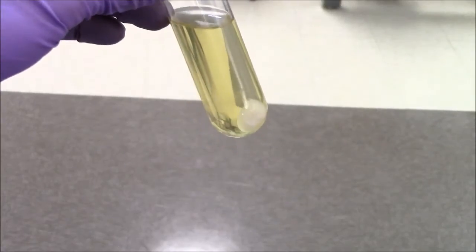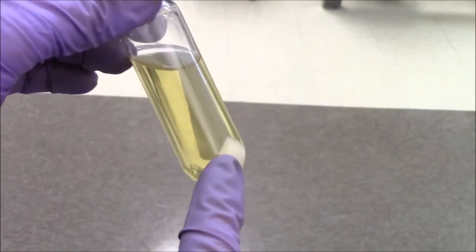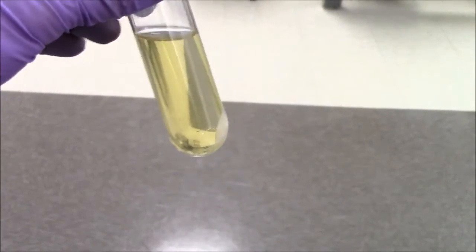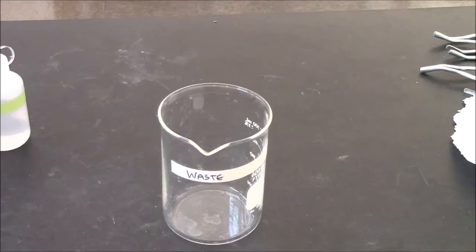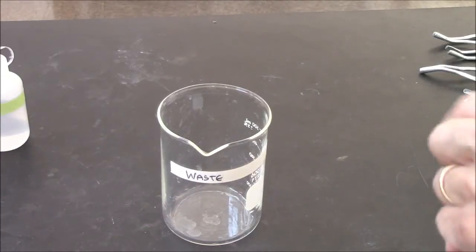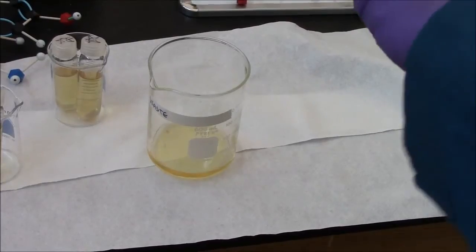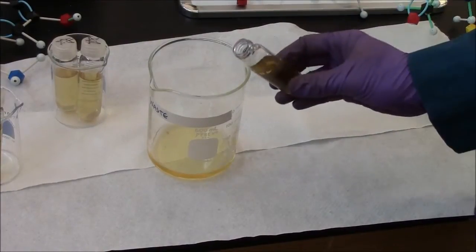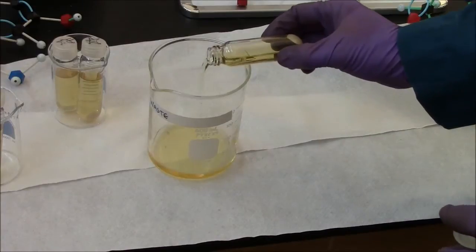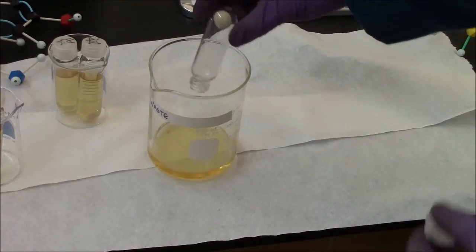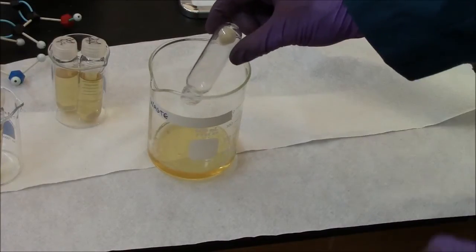So here's a sample that has bacterial cells pelleted at the bottom of the centrifuge tube. So there will be a designated waste beaker on the buffet table for you to pour out your broth. I'm pouring off the supernatant. You can see the bacterial pellet stays put.